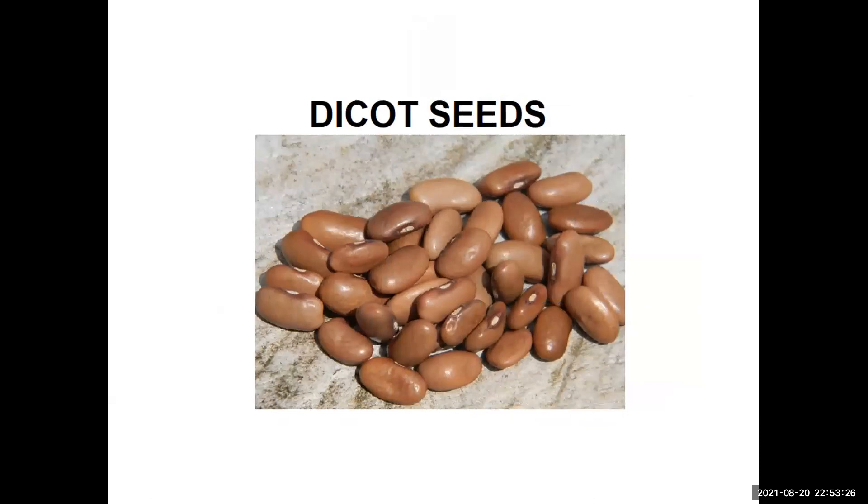Plants like pea, bean, and gram have two cotyledons. These are called dicot plants.